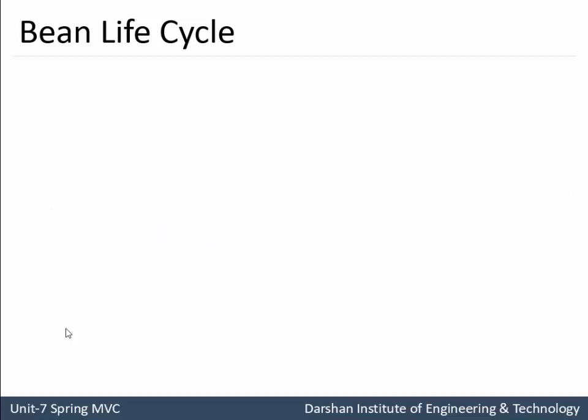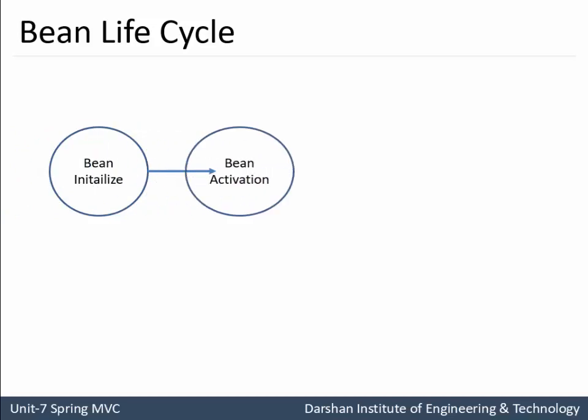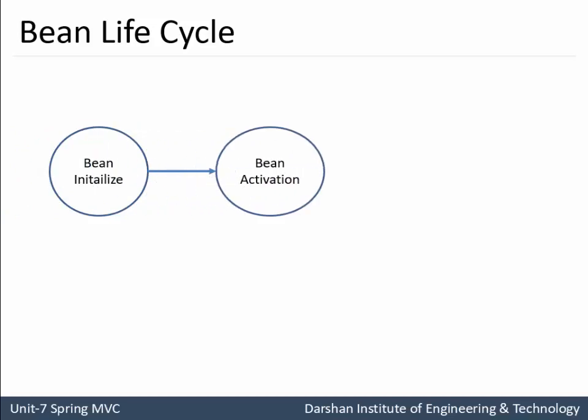Let us check the diagram of the bean life cycle. First, the bean is initialized within the container. Second is bean activation — whatever activity such as setter methods, getter methods, setting attributes, getting attributes, etc. Processing of a request is known as bean activation. For example, the bean will communicate with the database to either retrieve data or insert data. The last stage is bean shutdown, that is bean destruction, and the container will make this bean available for the garbage collector. So the stages are: bean initialization, then bean activation, and then bean destruction.